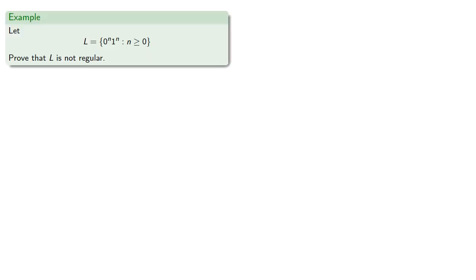So let's consider the language consisting of strings where there's some number of zeros followed by the same number of ones, and let's prove that L is not regular. We can prove this by showing that any pairwise distinguishable set over L can be expanded, but we'll leave that as an exercise.